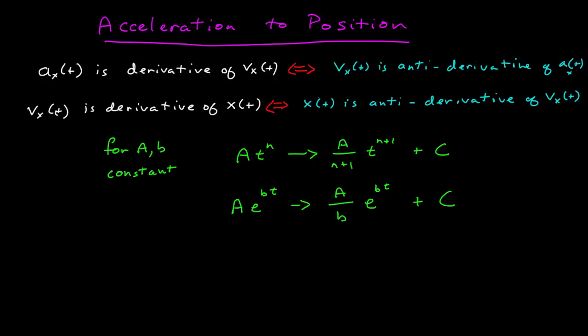To go backwards, the opposite of differentiation is anti-differentiation. So the things we need to know is where the acceleration function is the derivative of the velocity function, that means the velocity function is the anti-derivative of the acceleration function. In the same way, if the velocity function is the derivative of the position, then the position function is the anti-derivative of the velocity function.